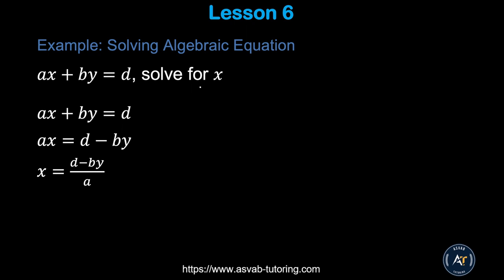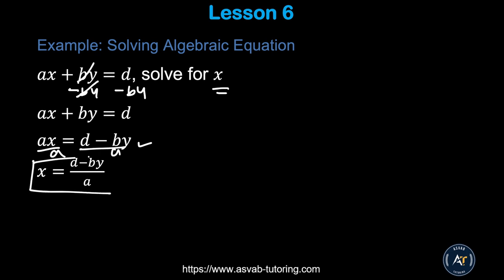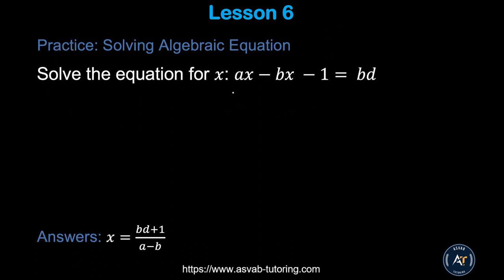Now let's look at algebraic equations with only letters — many students get confused here, but it's straightforward. To solve for x in an equation like ax + by = d: subtract by from both sides so 'by' cancels, giving ax = d − by. Then divide both sides by a, giving x = (d − by) / a. Try the practice problem and confirm your answer.